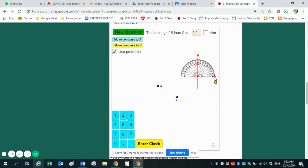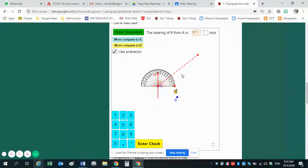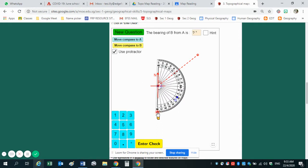Then you are going to move your protractor to where you're measuring from. It says the bearing of B from A, so you're going to drag the protractor to where A is. And then you have to tilt where the hand is. It's tilted so that zero faces north.